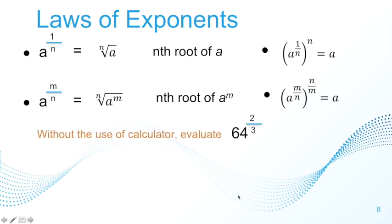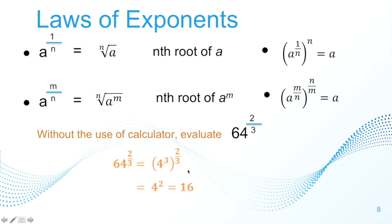Without the use of a calculator, evaluate 64 to the power of 2 over 3. We know that 64 is 4 to the power of 3, raised to the power of 2 thirds. Multiplying the two exponents using the power rule: 3 times 2 over 3 gives 2, so this is 4 squared, which equals 16. The value is 16.